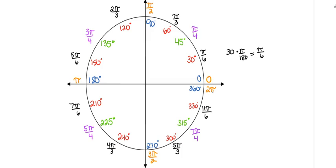Each pattern has its own rule: every quadrant you're adding half a pi, every 30 degrees you're adding one-sixth, and every 45 degrees you're adding one-fourth. This unit circle and its patterns are really important. Let's flip over to the back side.